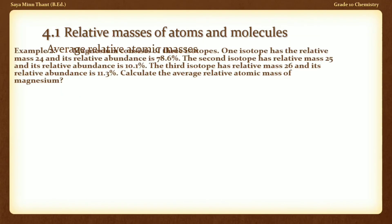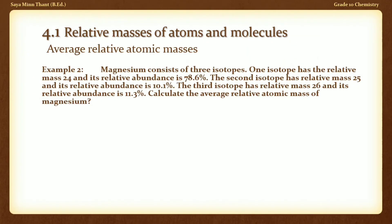Magnesium consists of three isotopes. The first isotope has relative mass 24 and relative abundance 78.6%. The second isotope has relative mass 25 and relative abundance 10.1%. The third isotope has relative mass 26 and relative abundance 11.3%. Calculate the average relative atomic mass of magnesium.